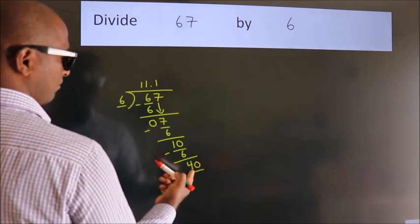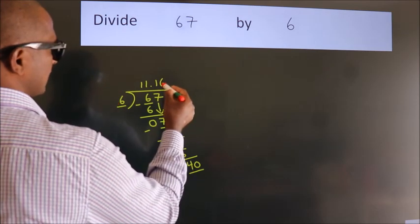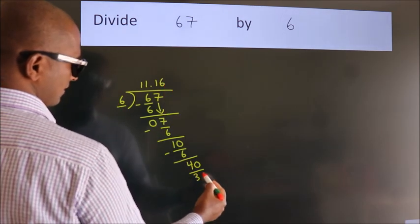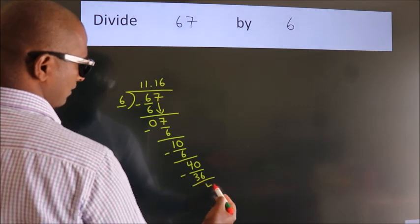A number close to 40 in the 6 table is 6 times 6, 36. Now we subtract. We get 4.